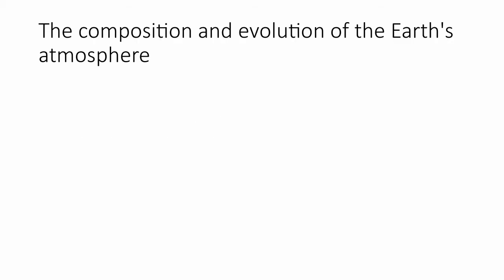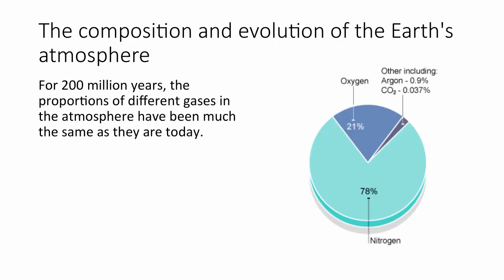The composition and evolution of the Earth's atmosphere. For 200 million years, the proportions of different gases in the atmosphere have been very much the same as they are today. 78% of dry air is nitrogen (N2), 21% is oxygen (O2), of the remaining 1%, 0.9% is argon, and the other remaining gases include carbon dioxide at a concentration of 0.037%.